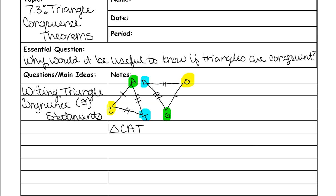The little triangle symbol tells you that the name coming up is the name of a triangle, just like we have an angle symbol when naming angles. So for triangle C-A-T: C is yellow, A is green, and T is blue. We want to write that triangle as congruent to the one on the right, but we have to name it the same way — yellow, green, blue — which means the other triangle will be O-G-D. That's how you name congruent triangles.